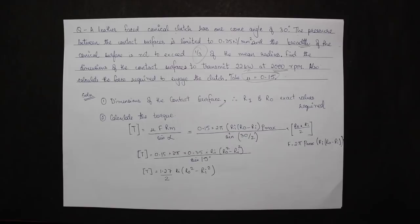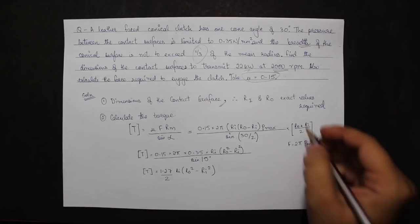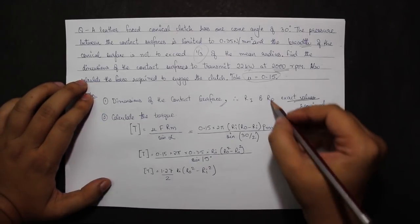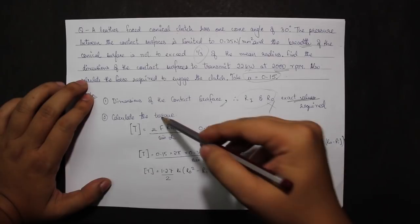My first step is calculation of contact surfaces, i.e. ri and r0. In the previous question an approximate value was required, but in this I need to calculate the exact values. Neither ri nor r0 is given, so I cannot assume anything.